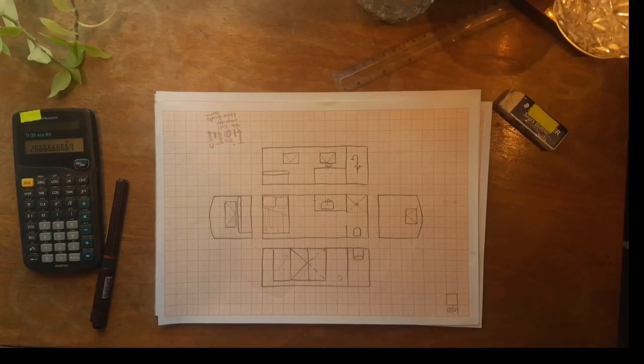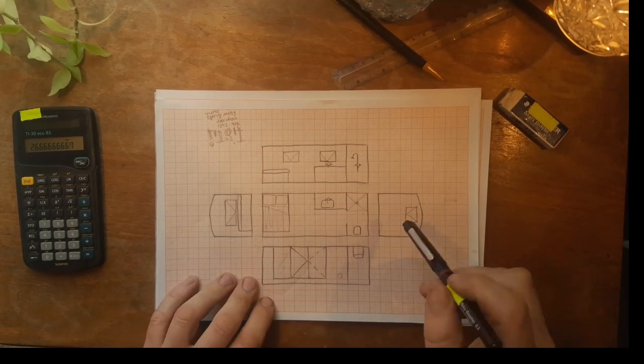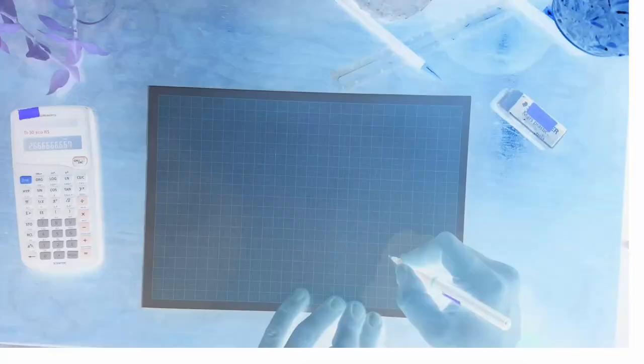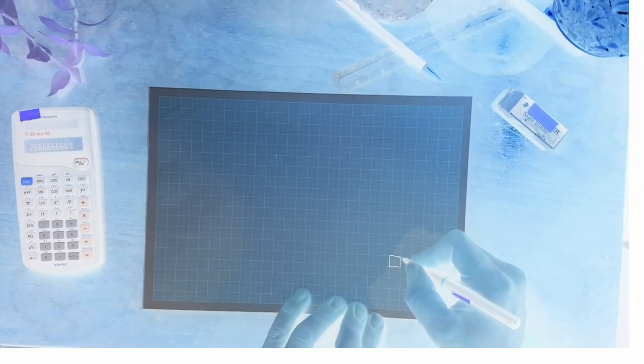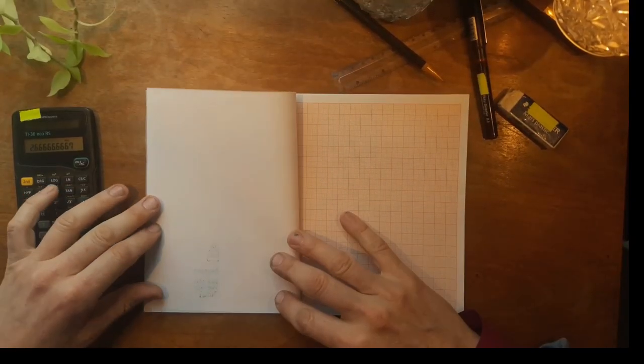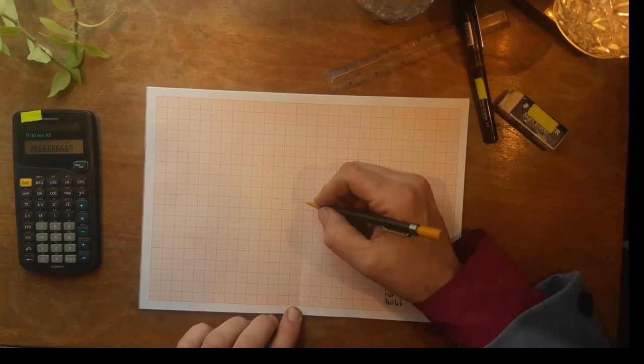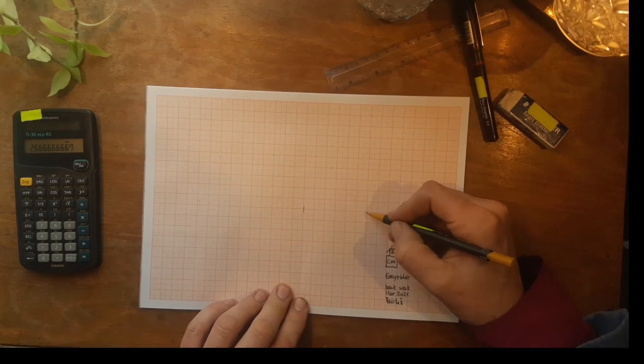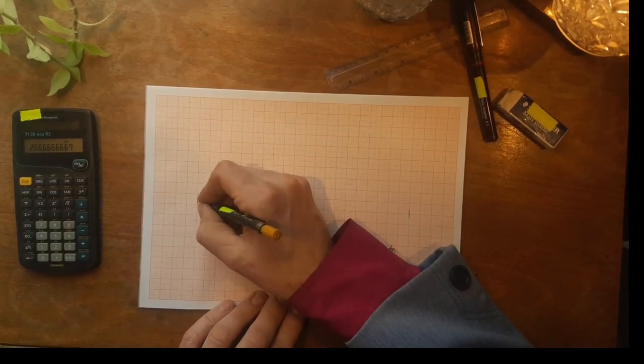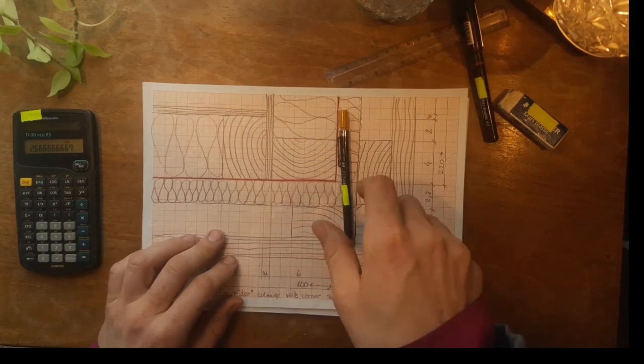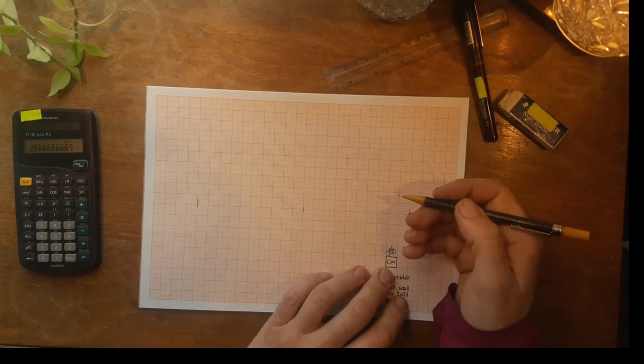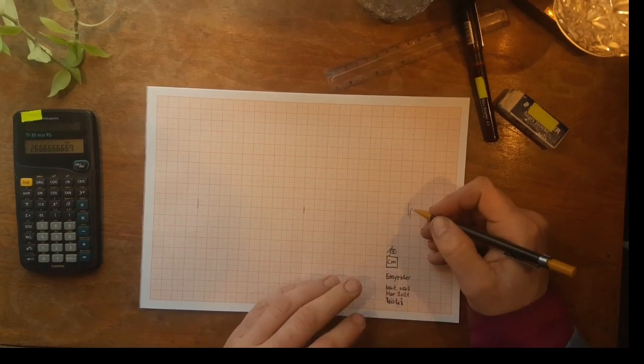So I start with the back wall. I'm gonna draw it 1 by 30 to profit from the size of the paper. Finding the middle, going 5 sections to the right and 5 sections to the left, and then the little walls go a little bit inside.